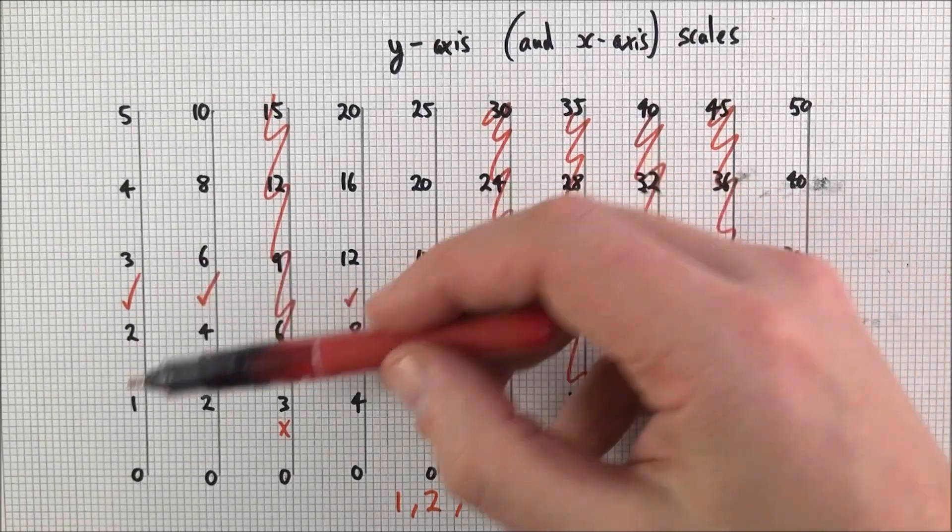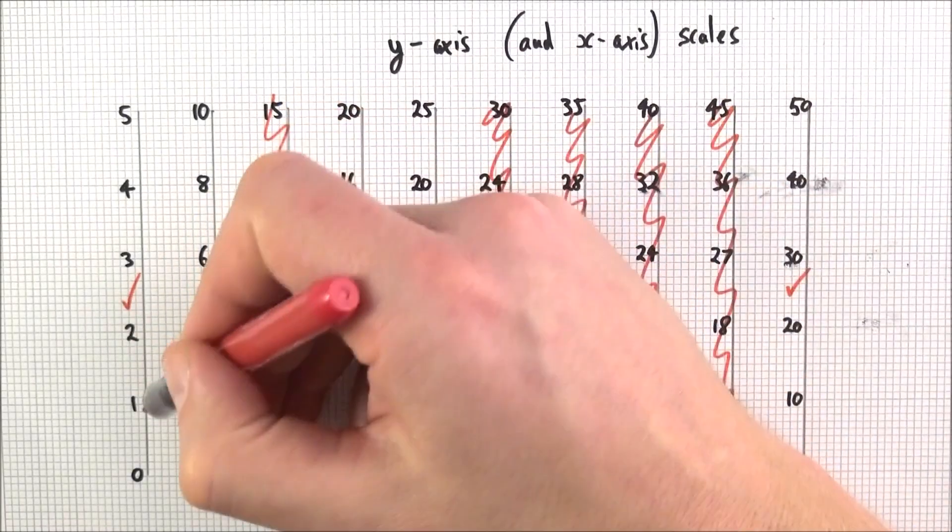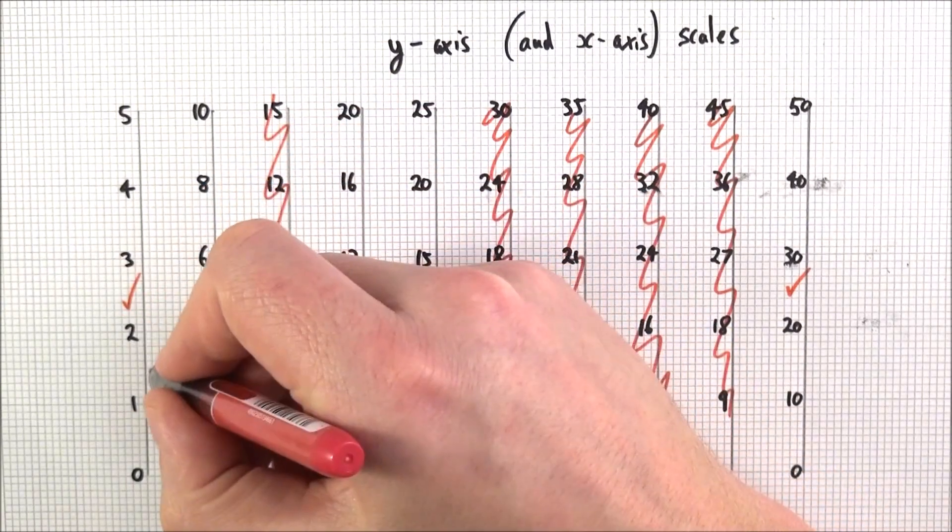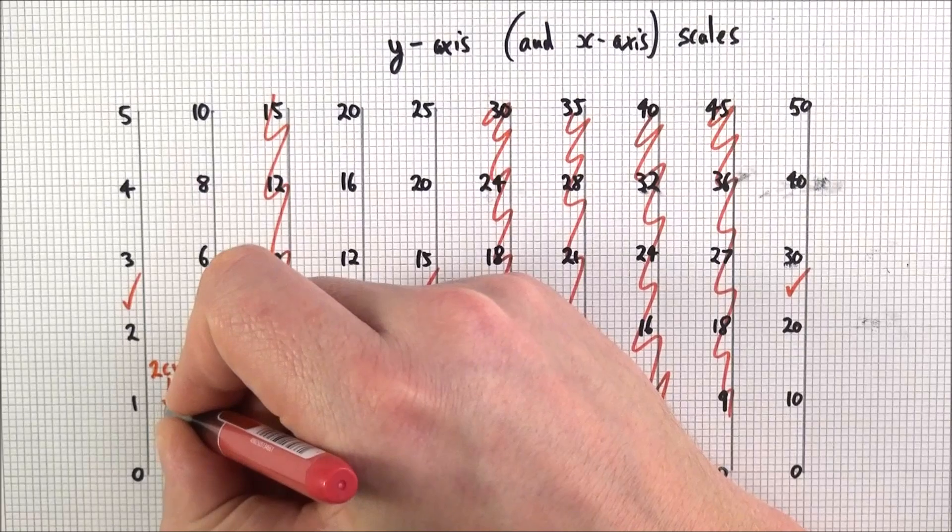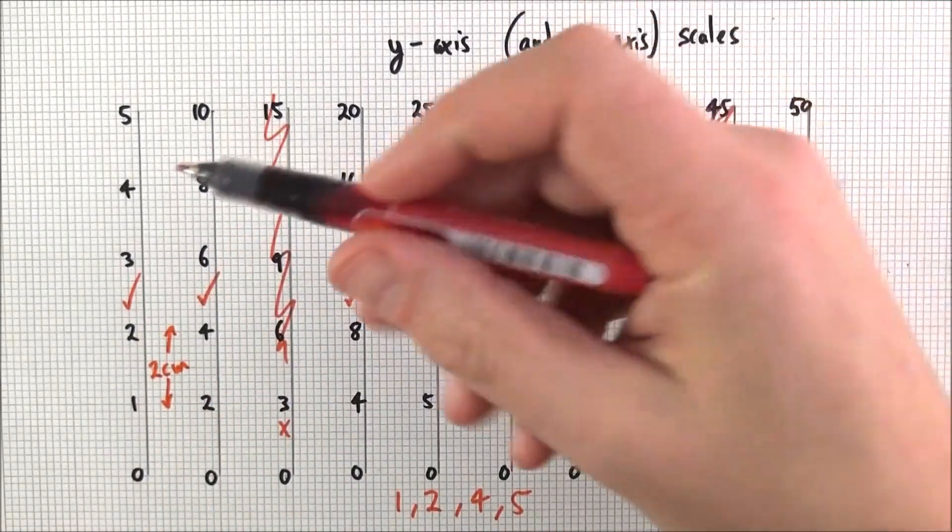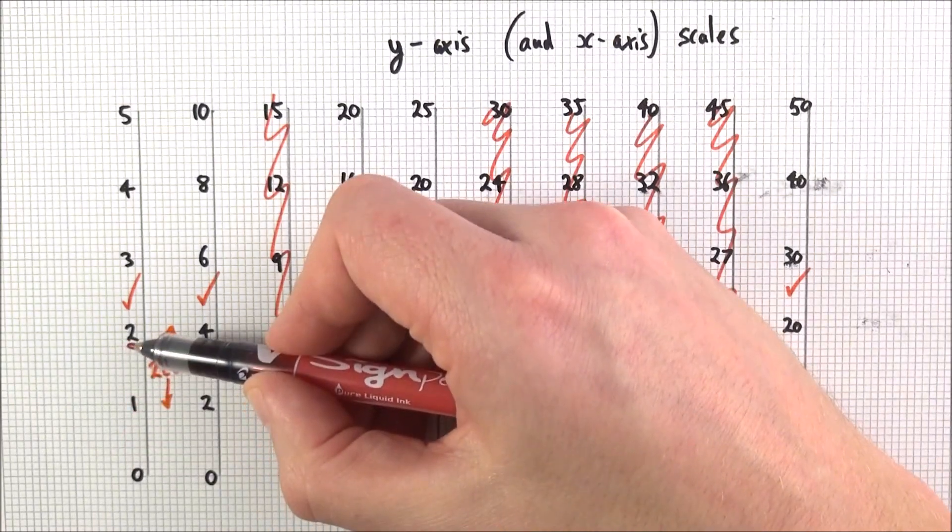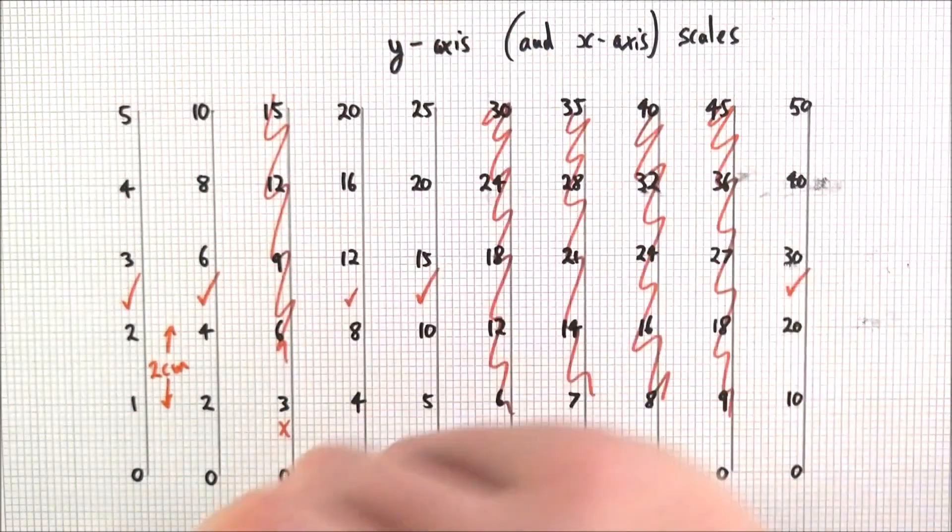The other thing about this is that you must label at a regular interval, so perhaps every other large square. So this is basically a gap of about 2cm between your values, and the other thing you must do is make sure that you go up uniformly. So we always have the same interval within each gap on the graph.